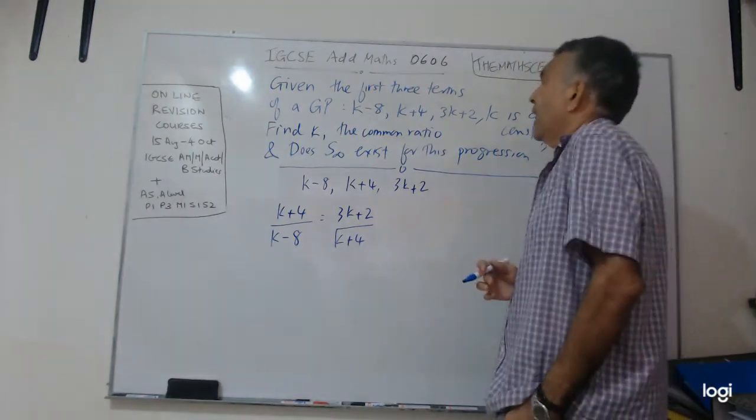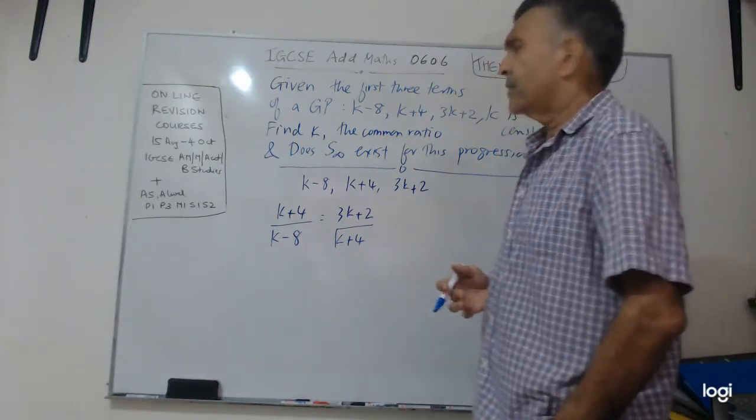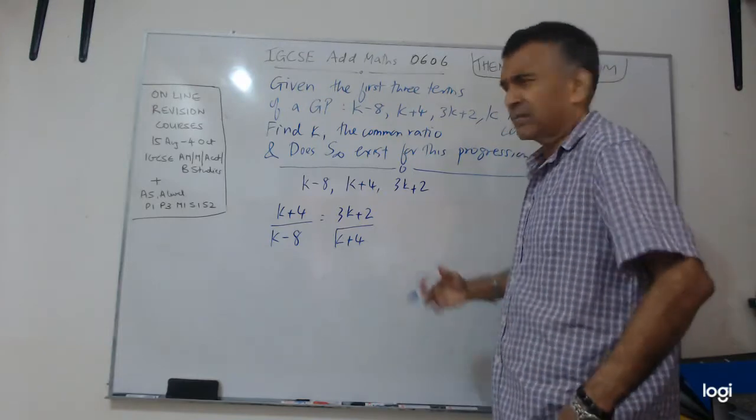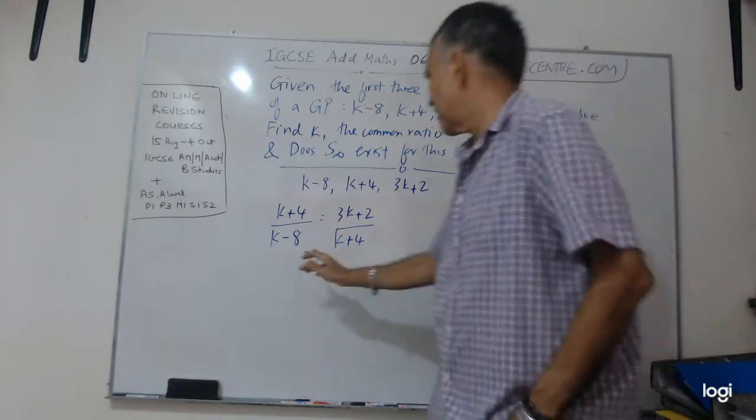The second term over the first term will be equals to the third term over the second term, that's the idea. This is equals to the common ratio. Now basically to find K, I think it will be easy for you. You must be pretty confident about this. Let's cross multiply.